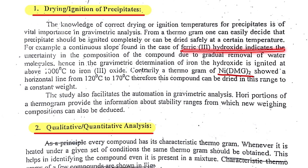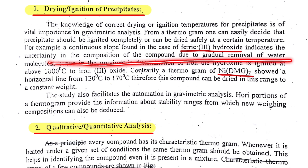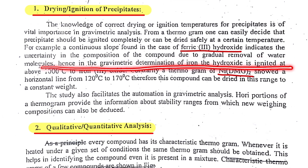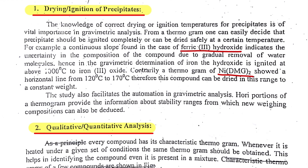For example, ferric hydroxide shows uncertainty in composition due to gradual removal of water molecules. Hence, in gravimetric determination of iron, the hydroxide is ignited above 1000°C to convert it to iron oxide. Below 1000°C there is a reduction in weight not due to decomposition of ferric hydroxide but due to gradual removal of water. So to obtain correct information, these precipitates should be ignited at 1000°C or above.